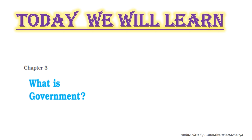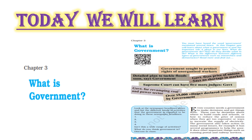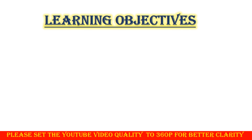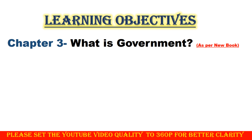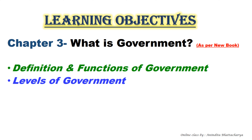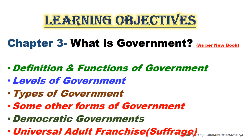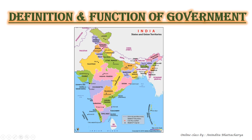Hello, my dear students. Welcome to my SST class. Today we will start a new chapter from civics — Chapter 3: What is Government? The learning objectives of this chapter include the definition and functions of government, levels of government, types of government, other forms of government, democratic government, and universal adult franchise.